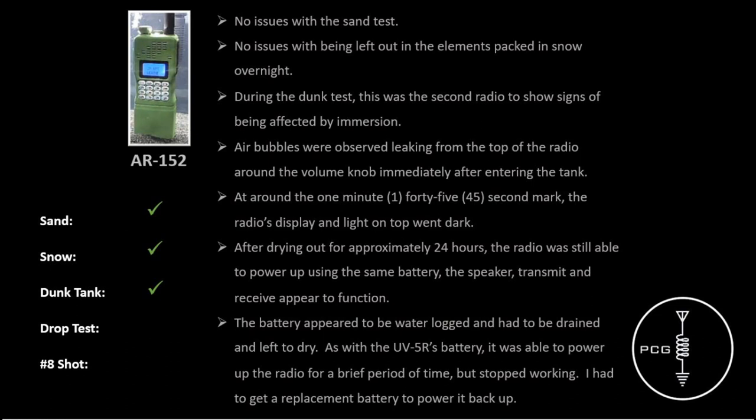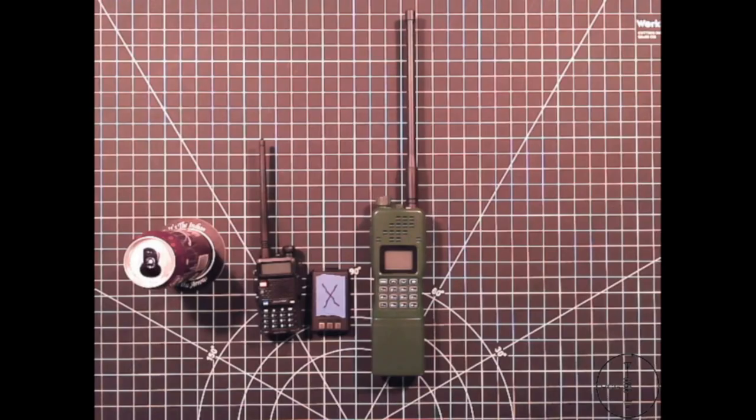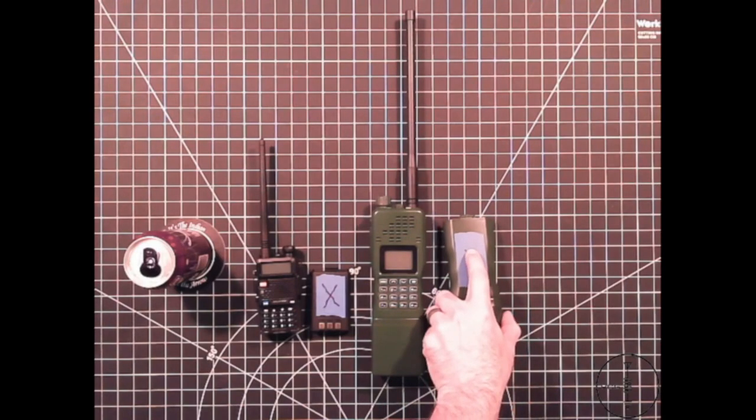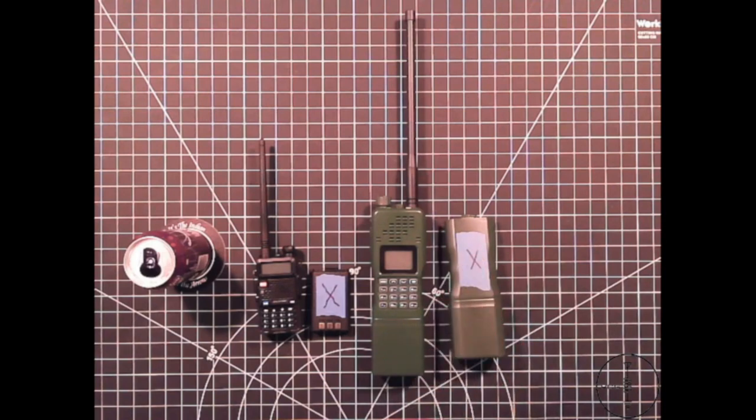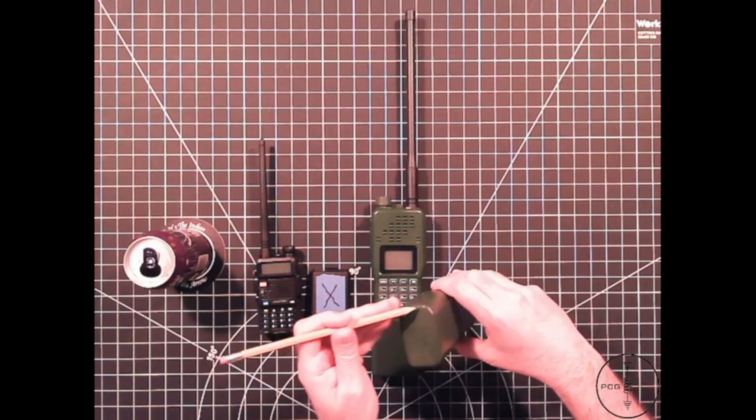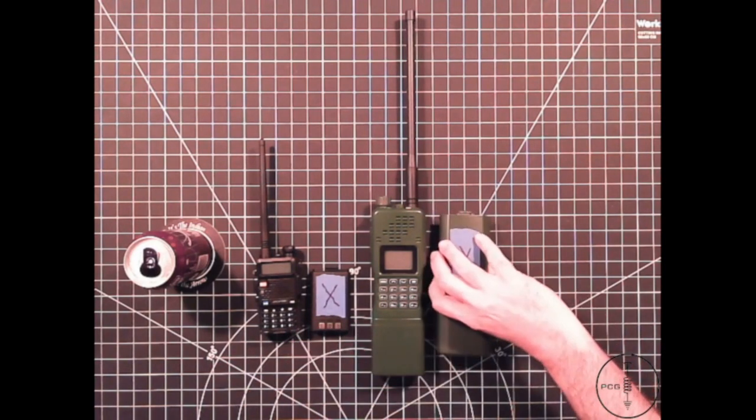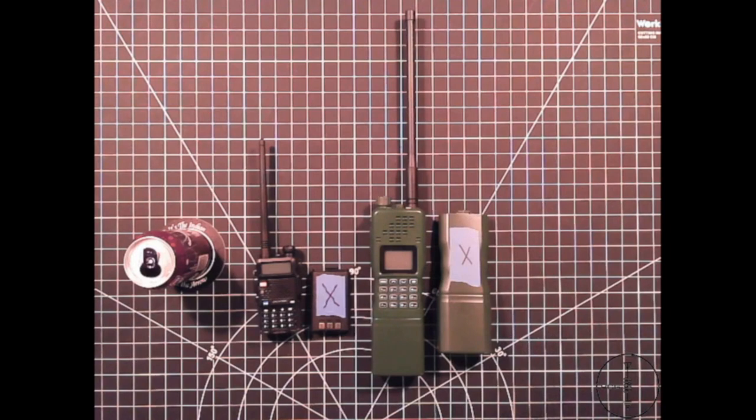After drying out, the radio was still able to power up using the same battery. The speaker, transmit, and receive all appeared to function. However, regarding the original battery, it appeared to be fairly waterlogged. There's a little seam on this battery, and that's where most of the water was observed leaking from. And so once it dried out, as with the UV-5R battery, it was able to power up the radio for a short period of time, but then it stopped working, and I had to replace it with a new battery. It appears that this battery no longer holds a charge.